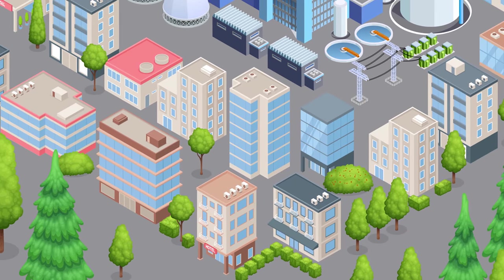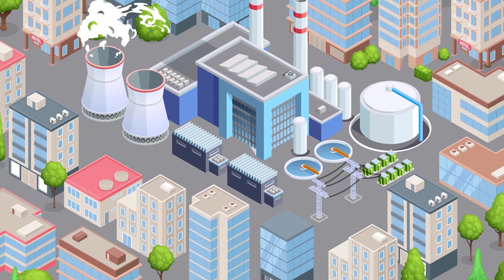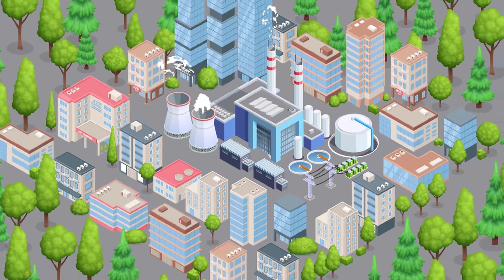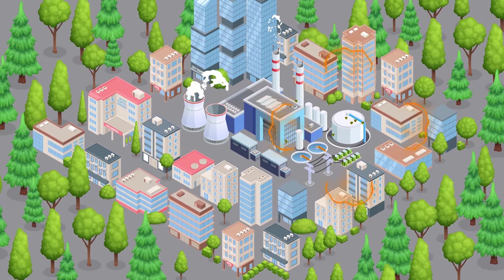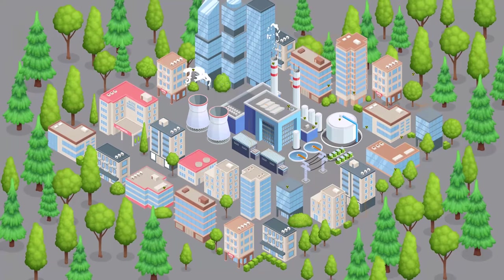When breaking down a nuclear reactor for decommissioning, even the building materials surrounding the core can build up radioactivity. Before disposing of this waste, it should be safely shielded to prevent exposure.